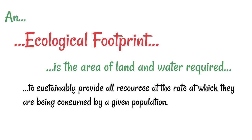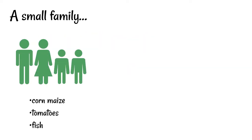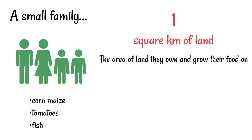So what exactly does that mean? Let's first look at a slightly overly simplified example. Imagine we've got a small family of four and they live on corn, maize, tomatoes and fish. They've got an area of land that they own and they grow all of their food on that. They don't take anything from outside of that area.